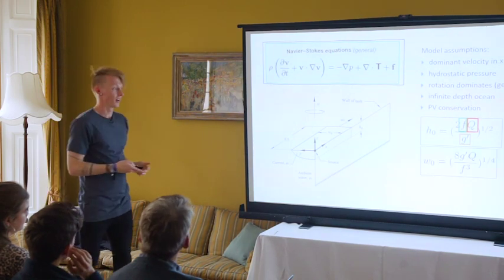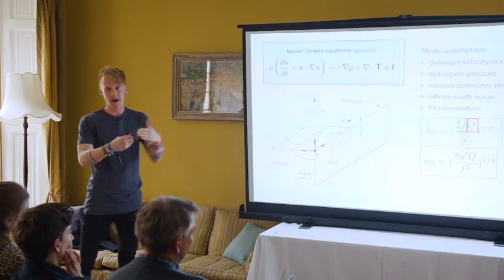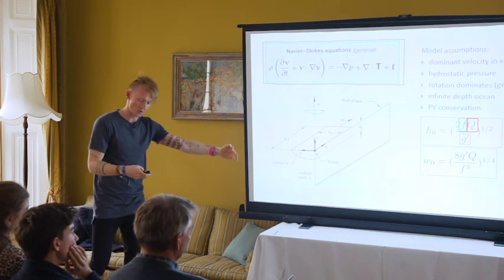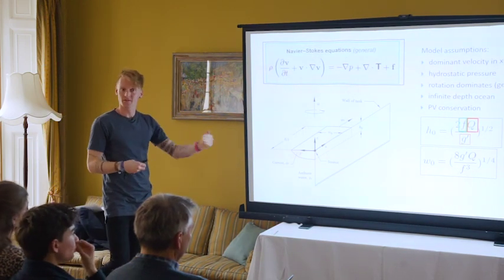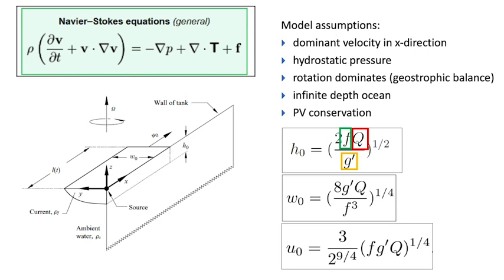Let's do the same thing — a measurement for the width: how wide is the current, how far away from the coast does my river current extend? Again, it's just given in terms of those three important parameters: G', Q, and f. And then finally you get the velocity, which has a numerical constant at the front but otherwise it's in terms of those same three parameters.